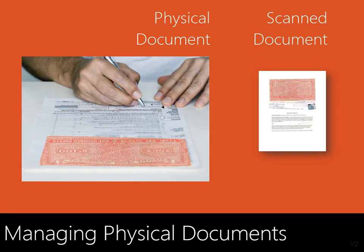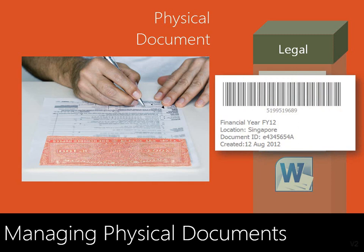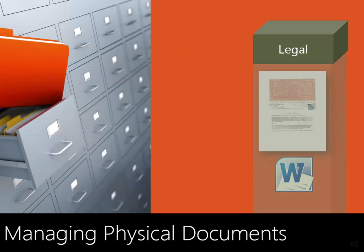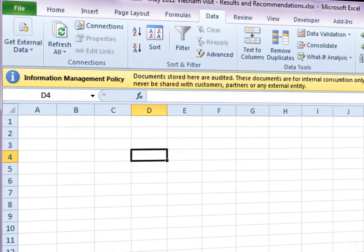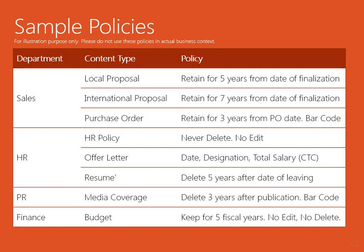Often we store scanned copies of physical documents in the SharePoint libraries. Here you can use a policy to create a barcode and label which can be pasted on the physical document — this way you can search the physical document easily. A policy should also have a policy statement which clearly informs and educates all employees. When a document is opened in Microsoft Office, the related policy is visible. Different types of documents are organized using different content types, and each content type can have different policies.